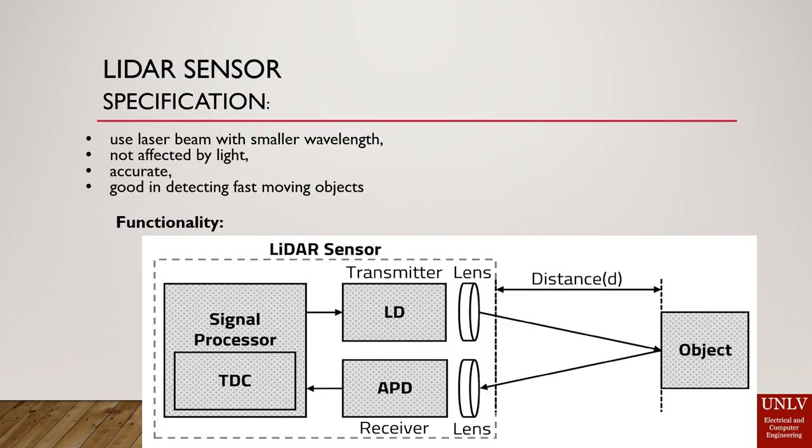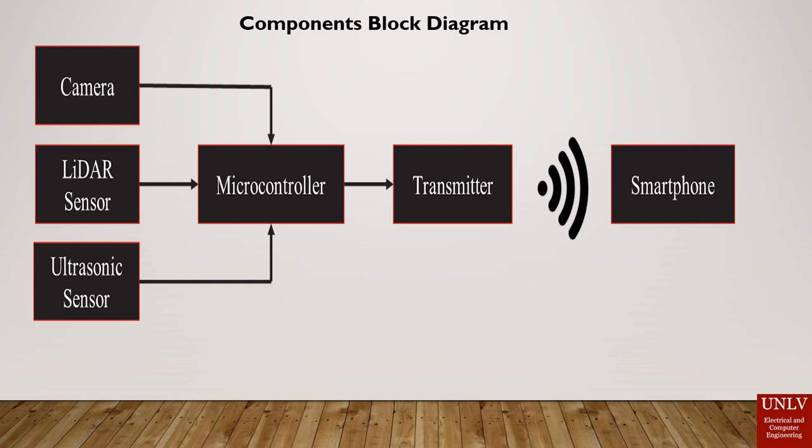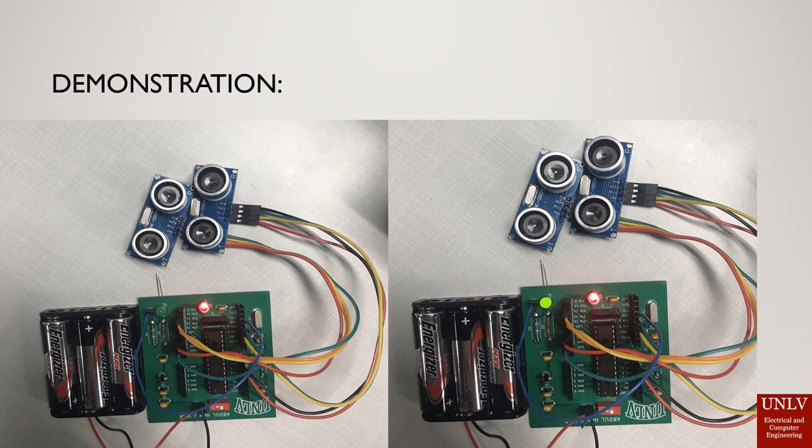We also have a LiDAR sensor in the sensor box. It works with a laser beam, is not affected by light, is very accurate, and works well with fast-moving objects. Here's the block diagram: we have a LiDAR, a camera, and an ultrasonic sensor all attached to a microcontroller. The microcontroller collects information and sends it to a transmitter, which sends the information to a smartphone, letting the driver or operator know if there's something nearby.